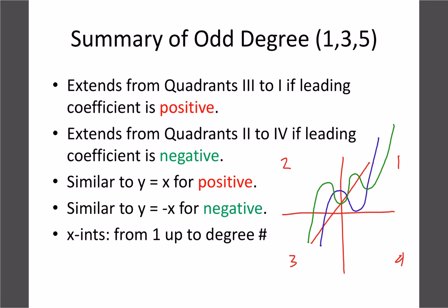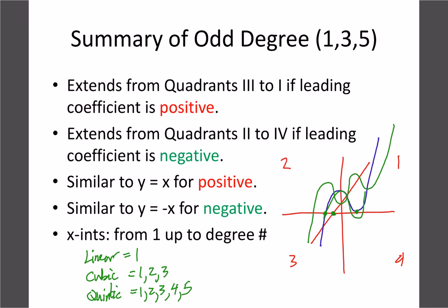For x-intercepts: a linear has one. A cubic can have one, two, or three — it could touch at one spot for two, or curve all the way down for three. A quintic can have one, two, three, four, or five x-intercepts. For example, a quintic with four intercepts could go up, down, up crossing three times, with the fourth just touching in one spot.